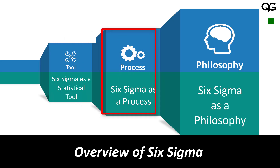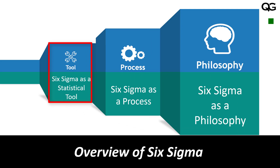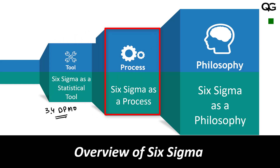There are three broad approaches to implementing Six Sigma: using it as a statistical tool, using it as a process, or using it as a philosophy. When implementing Six Sigma as a statistical tool, you are looking for less than 3.4 defects per million opportunities — this is what Six Sigma performance means: 3.4 defects per million opportunities. When using Six Sigma as a process, you focus on improving processes using two approaches: DMAIC and DMADV.